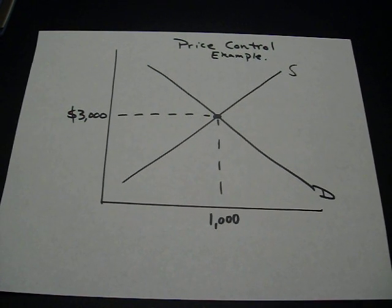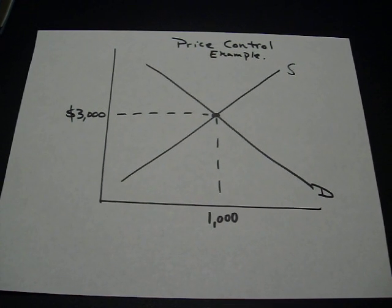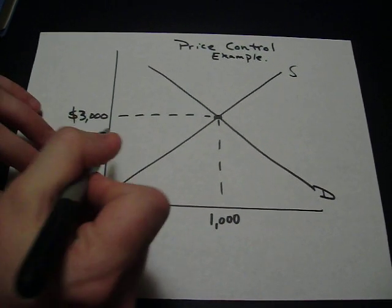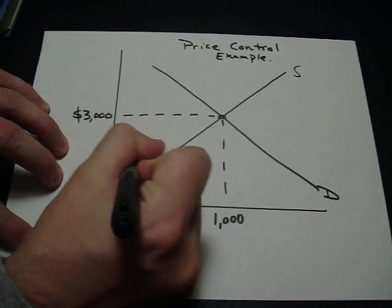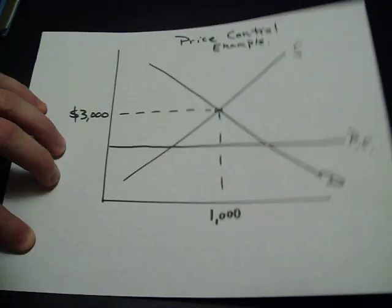So maybe this is rent in New York City where the going price for an apartment is $3,000 a month. The government sees that and says $3,000 a month is not fair. So what they do is they set a price ceiling. This price ceiling is this price right here. I'm going to abbreviate as PC.